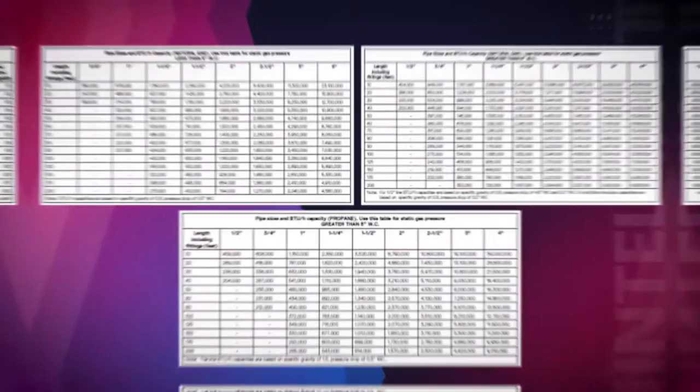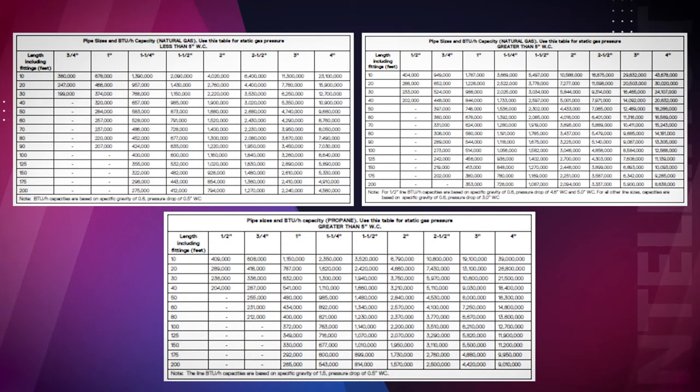Additionally, ensure that the dynamic gas pressure does not drop more than 2 inches of water column from the static set point. Ensure that the gas line has a drip leg installed and the total run length does not exceed the values listed in section 6.10 of the manual.